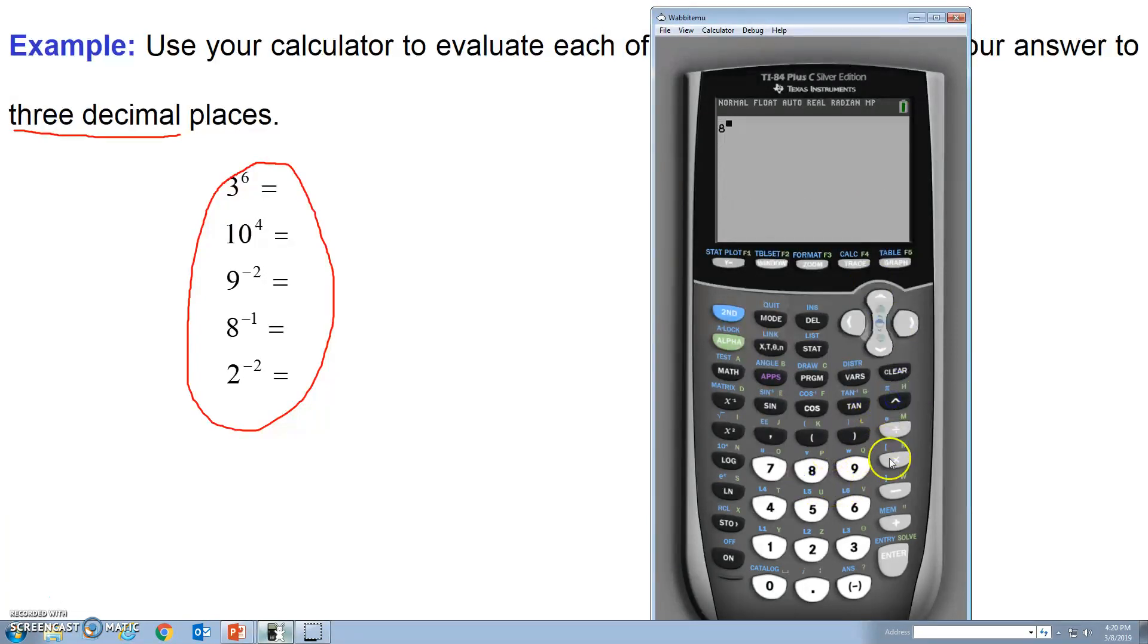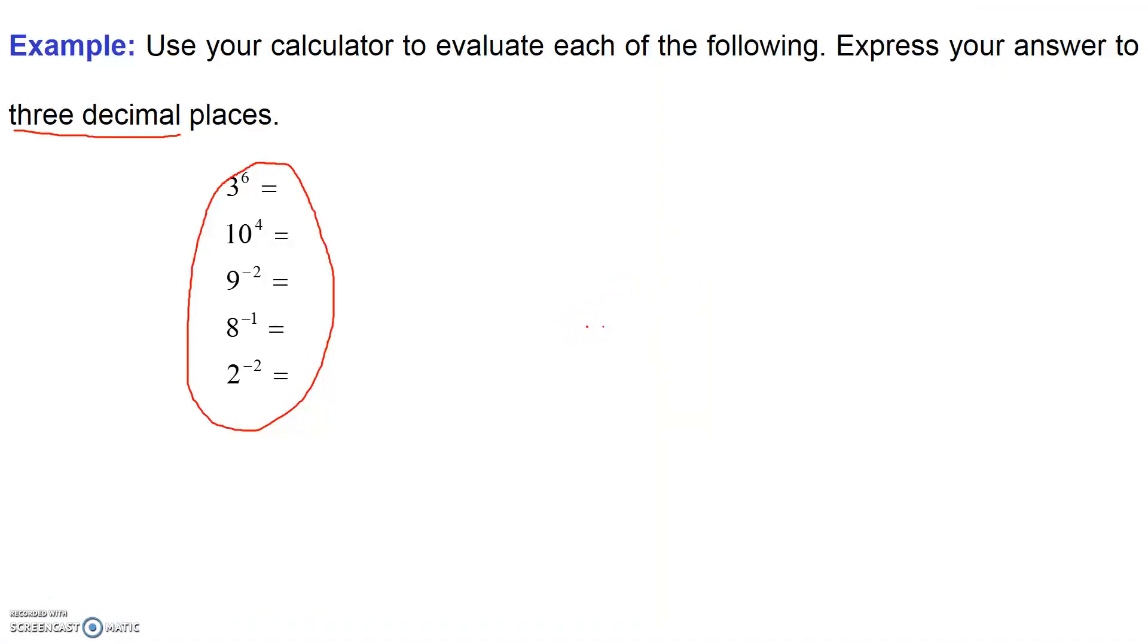Eight to the power of minus one. Enter. And there we go. Point one, two, five. And that would be three decimal places. Two to the power minus two. And enter. There we go. And so this would be written as point two, five, zero. Okay. So have a little practice in your own time and make certain that you can enter exponents into your calculator. See you later.